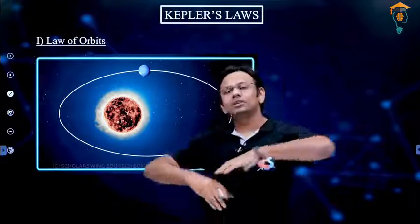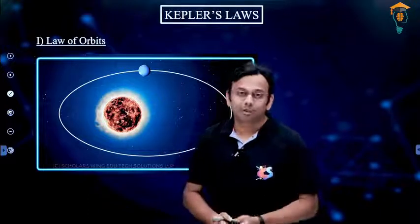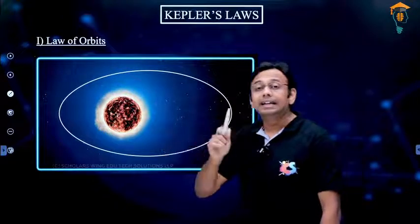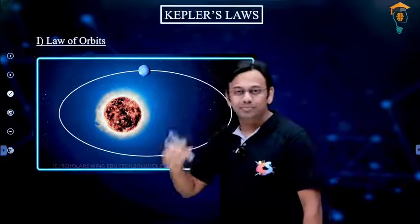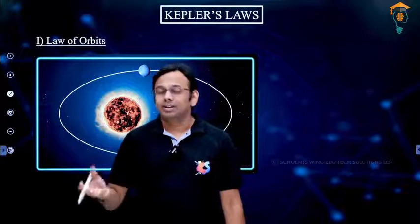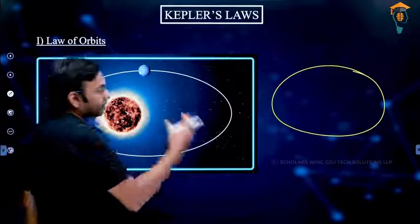Just for better visualization, I have shown the sun to be very big and Earth to be small compared to the sun but still quite big compared to the orbit. In reality, the size of orbit is much larger, and the sun and Earth can be treated almost like point-sized objects when looking at the orbit. I am assuming that by this time in mathematics you would have covered conic sections and studied about ellipse. If not, let me give a brief description of ellipse as a quick recap.